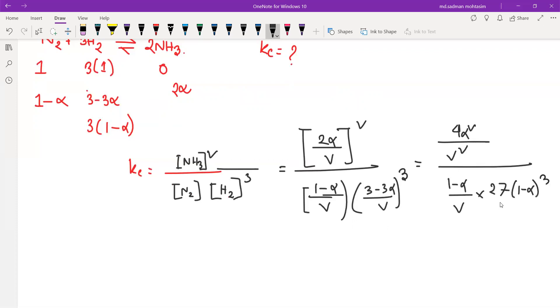V square. The V square, twenty-seven one minus alpha to the power four and V square. Four alpha square V square. I will write the expression. The equation is N2 plus three H2 is equal to two NH3.